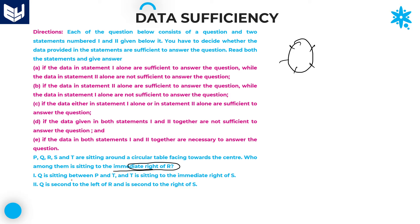The first statement is: Q is sitting between P and T — either P-Q-T or T-Q-P arrangement — and T is sitting immediate right of S. Taking T at a valid position where T is immediately right of S, and placing Q between P and T, the only remaining member R is fixed at the last position. Now all five members' positions are determined. The question asks for immediate right of R, and you get the answer using statement 1 alone.